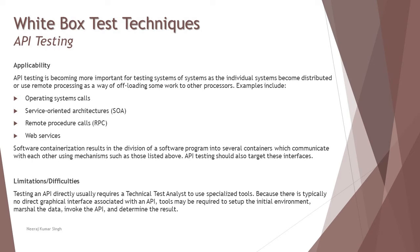API testing is becoming more important for testing systems of systems as individual systems become distributed or use remote processing to offload work to other processors. Distributing work can also be done with APIs — certain API functions can be written to distribute the load when many users are simultaneously working on your application. Examples include operating system calls, service-oriented architectures, the SOAP concept, RPC (Remote Procedure Calls), and web services. Software containerization results in the division of a software program into several containers which communicate with each other using mechanisms such as those listed above.